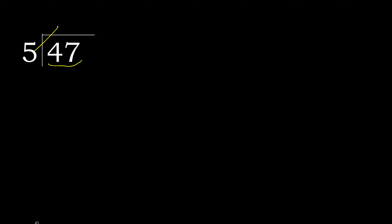5 multiplied by which number is nearest to 47 but not greater? 5 multiplied by 9 is 45. 45 is not greater. 47 minus 45 is 2.